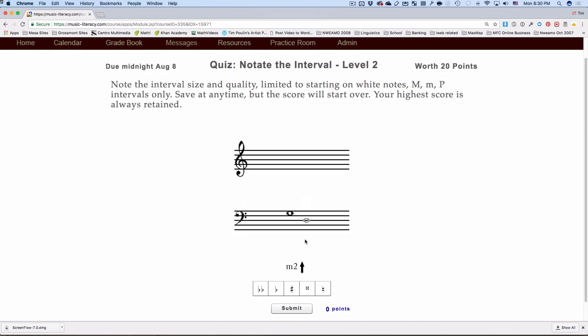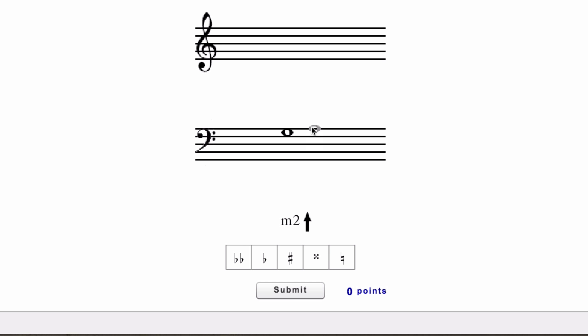So I hit Start, and it says minor second above. Well, minor second is a half step, so I need to go from G to Not A. That would be a whole step, but G to A flat. So I'm going to hit the flat, hit that in there, submit.